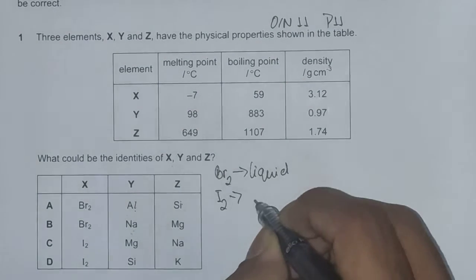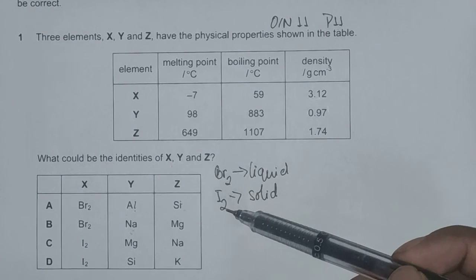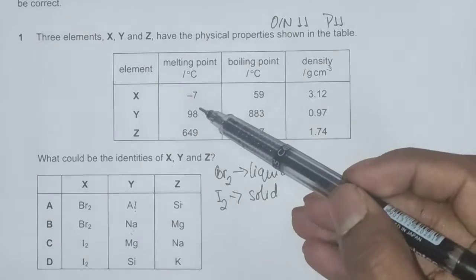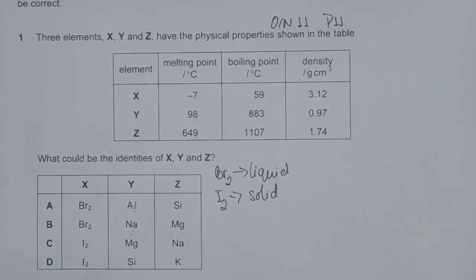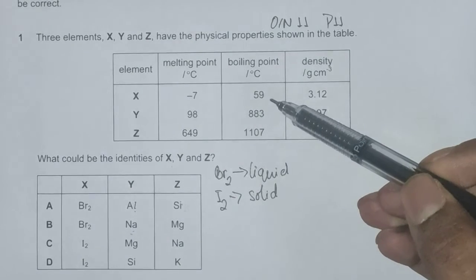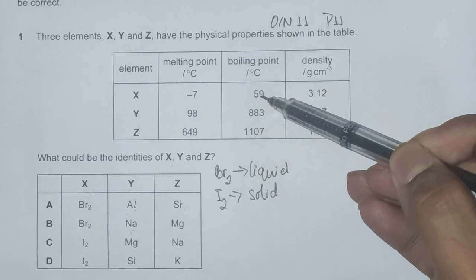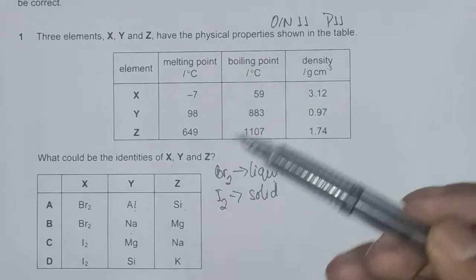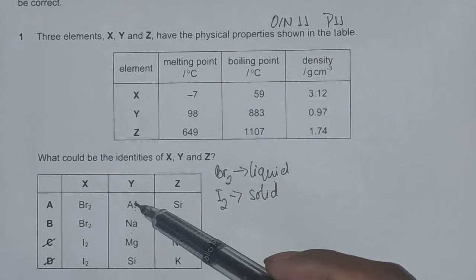Similarly, iodine is a solid. This would mean iodine should have its melting point greater than 25 degrees Celsius, but here X has a melting point less than 0 degrees Celsius, so X cannot be iodine. Also, the fact that the boiling point of X is 59 degrees Celsius corroborates that bromine should be liquid at RTP. So we can eliminate options C and D.